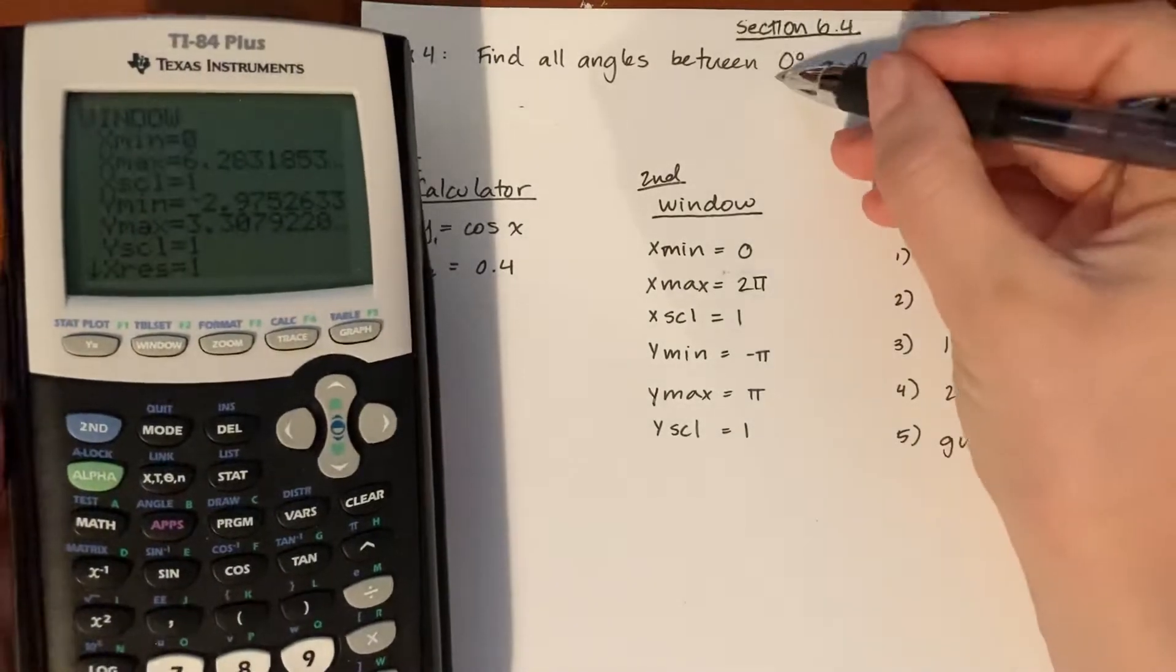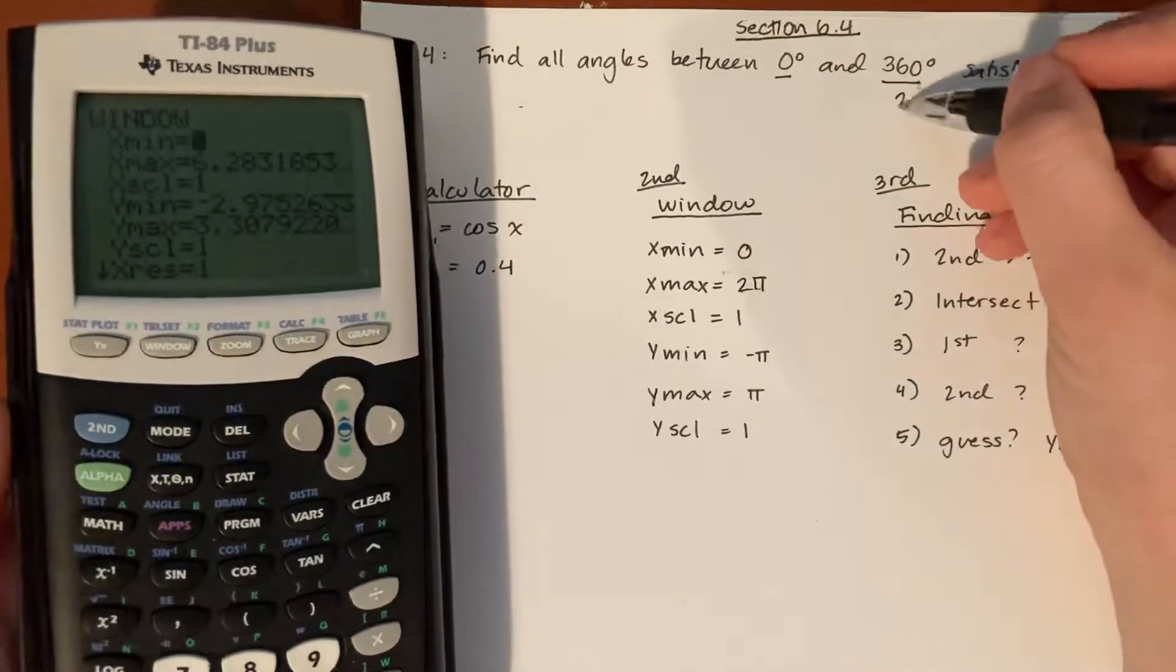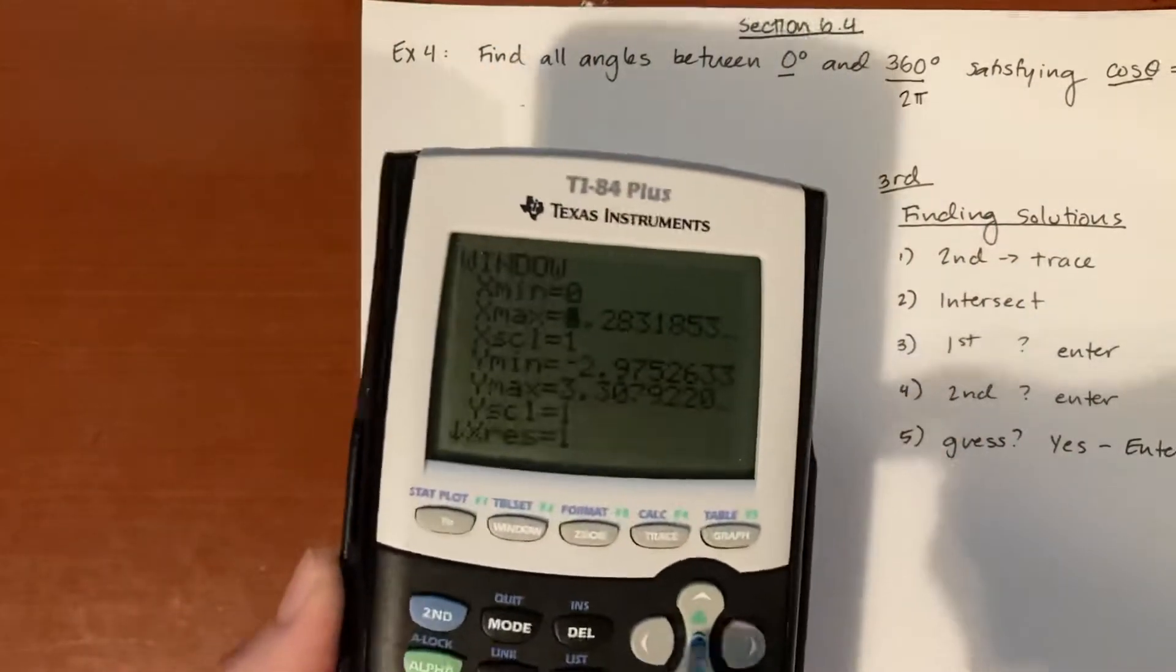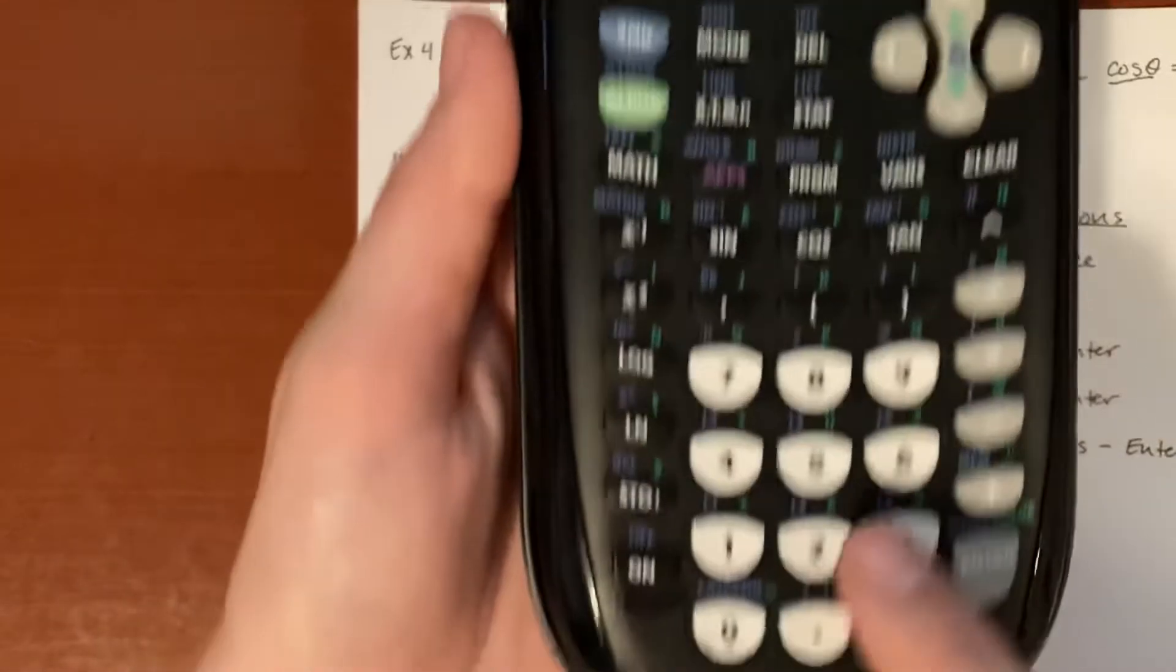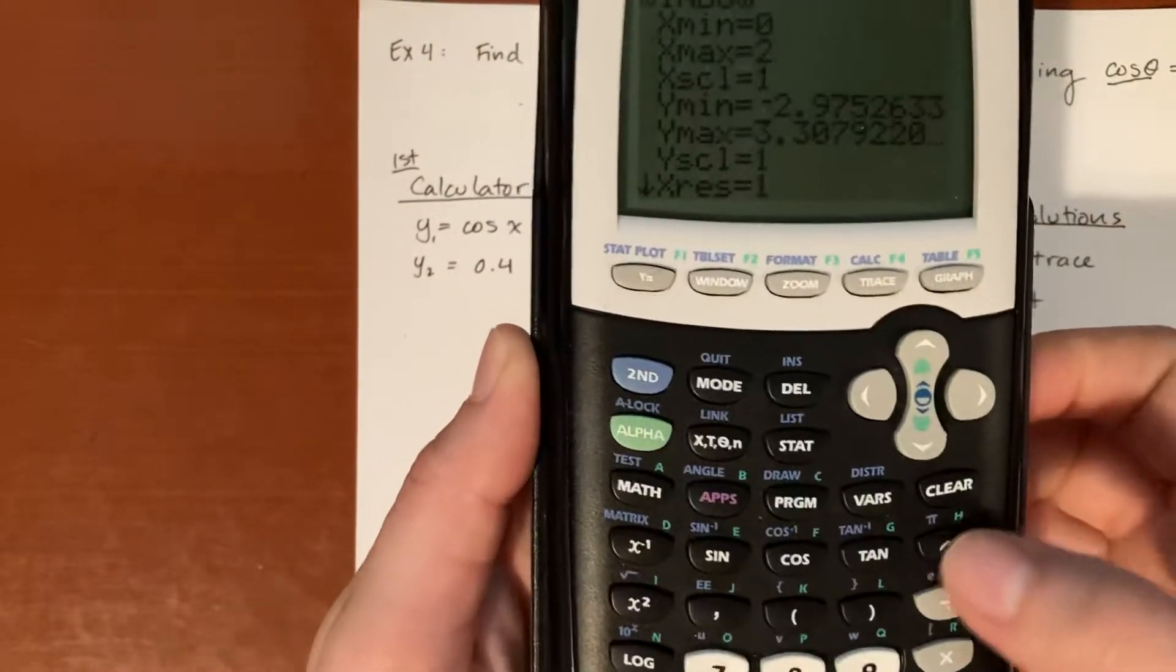And now 360 is actually the same as 2 pi, so we'll go ahead and into x max, you're going to click 2 and then hit second, this button here, to get pi. And there we go.